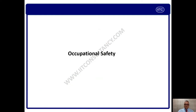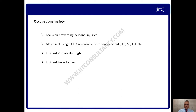Now the basic thing we need to understand is the difference between occupational safety and process safety. Occupational safety focuses mainly on preventing personal injuries — leg injury, finger injury, hand injury, face injury, eye injury, and any body part injuries. This occupational safety can be measured as per the OSHA standard in LTI (loss time injuries), loss time accidents, FR (frequency rate), SR (severity rate), FSI (frequency severity index), etc.